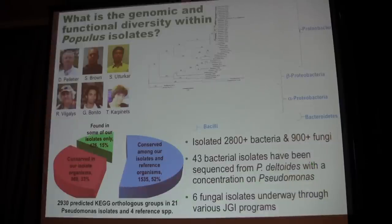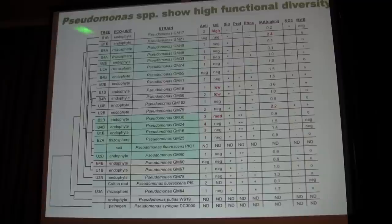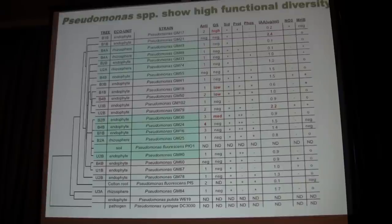These Pseudomonas isolates are interesting. They're all one OTU by 16S, but they vary quite widely in characteristics. Some came from the same tree — B1B being the same tree — and most are from the bottomland site. Some produce antimicrobials and some don't. Some have quorum-sensing activity, some don't. They all have siderophores, as expected for Pseudomonas, but some have phosphatase activity and some don't. So even within what would be called one OTU or one species, there's quite wide variation.